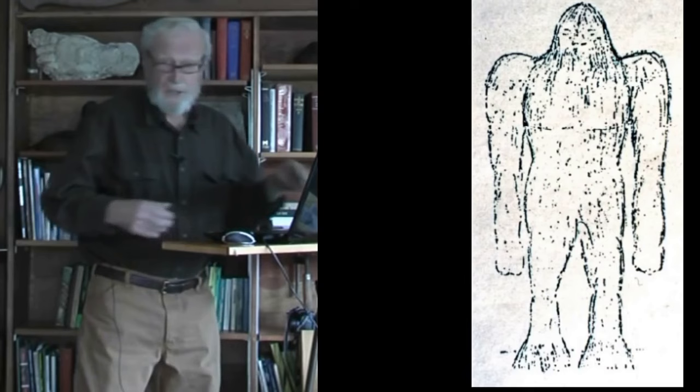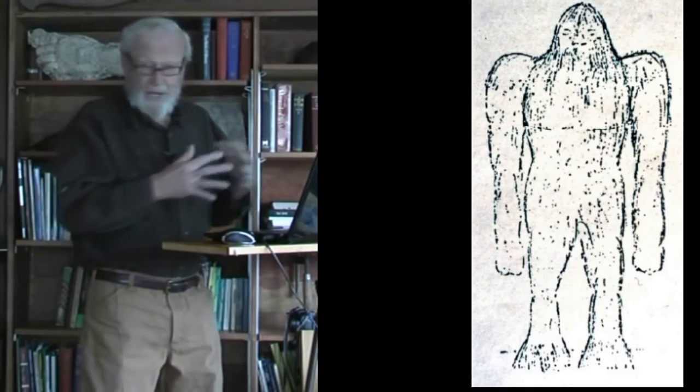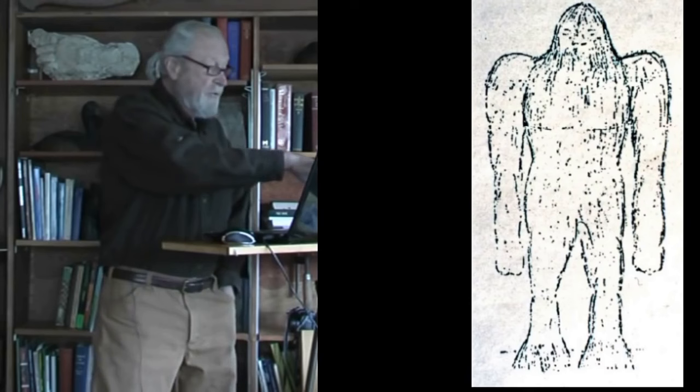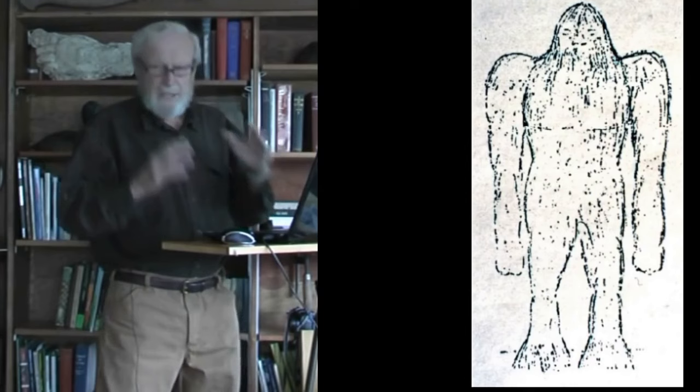I'd like to start with a question: what is it that people see that makes them think they've seen a Sasquatch and not a bear on its hind legs or a human in a fur suit? What they see — and sometimes describe and sometimes draw for us — is a huge, hair-covered, upright, human-shaped mammal. We can see from this drawing from Oregon from the 1970s the broad shoulders, the long arms, the short thick neck, and a tendency towards a somewhat pointed head.